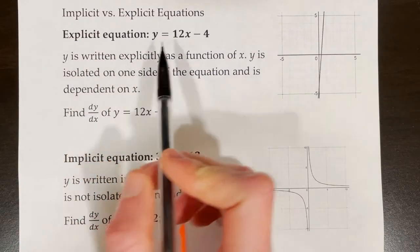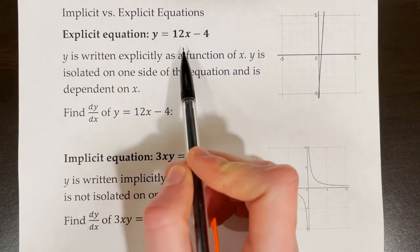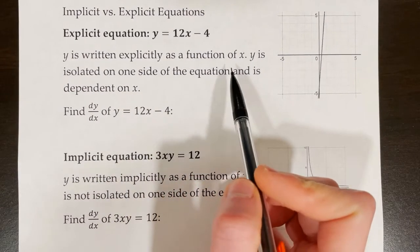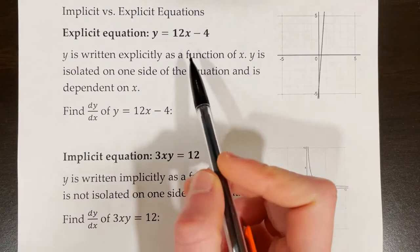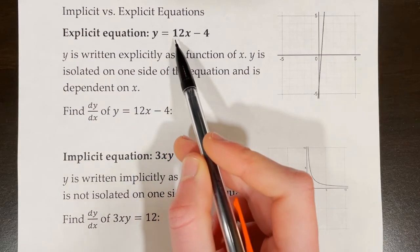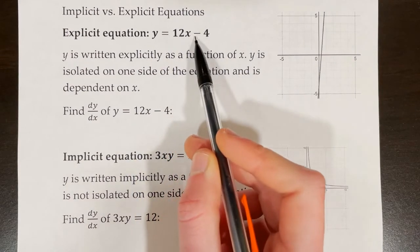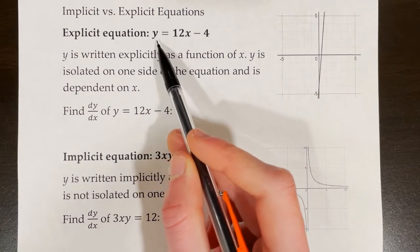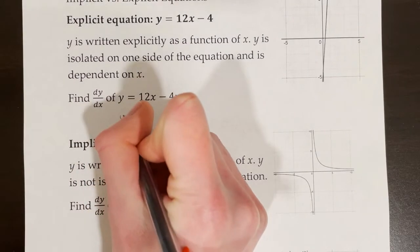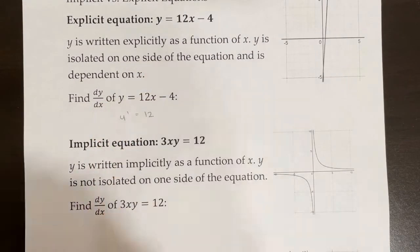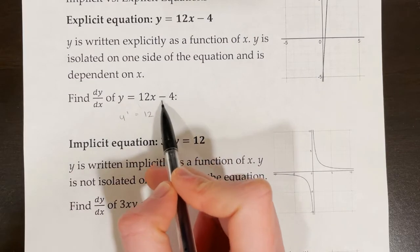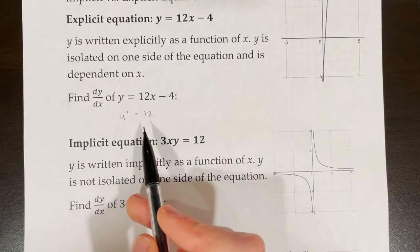This is an explicit equation: y equals 12x minus 4. Y is written explicitly as a function of x, which essentially means that y is isolated all by itself on one side of the equation and it is solely dependent on x. Whatever we plug in for x is going to influence what we have coming out for y. If we were asked to find the derivative of this equation, we would simply say y prime is equal to 12, because that is the slope of 12x and the derivative of negative 4 is 0.